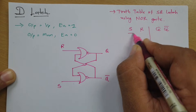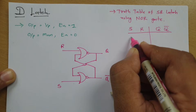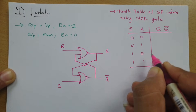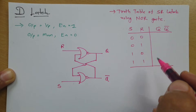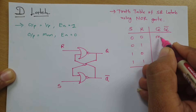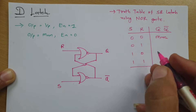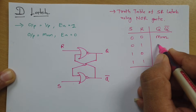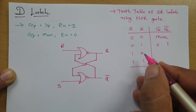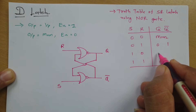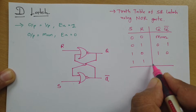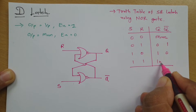If you see the truth table, inputs are S and R and output is Q and Q bar. As per two inputs, there are four combinations: 0,0 / 0,1 / 1,0 / and 1,1. When S and R is 0,0, output will stay in memory state. When S and R is 0,1, output will be Q=0 and Q bar=1. When S and R is 1,0, output is Q=1 and Q bar=0. And when S and R is 1,1, output will be invalid.